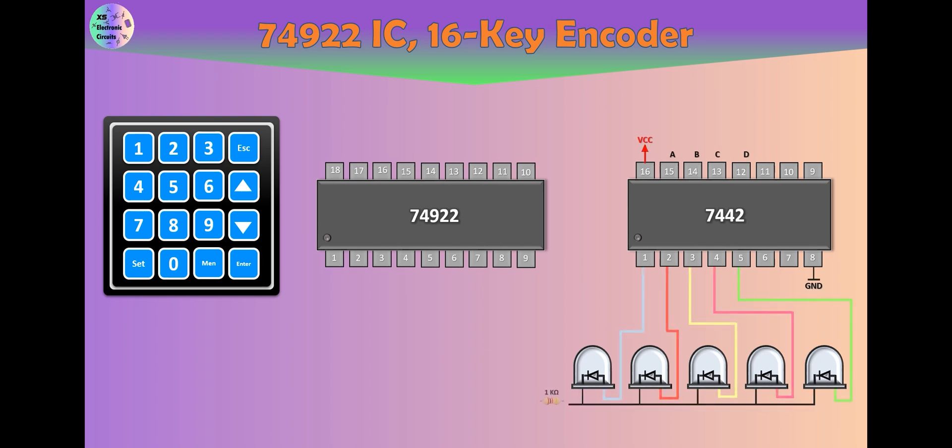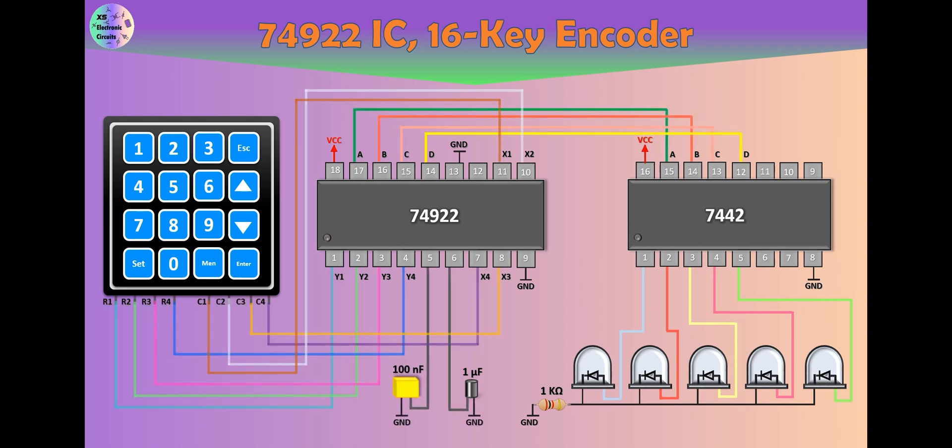Then, the IC7442, which is a BCD to decimal decoder, is used. The outputs of the first IC are connected to the inputs of this IC.